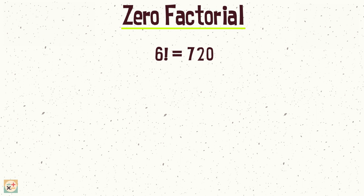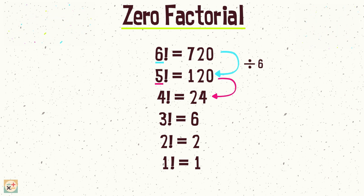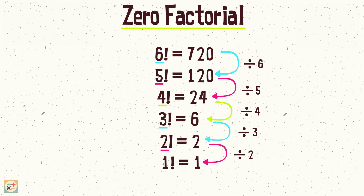Let's have a look at this pattern of factorials. Notice that if we work in descending order, each value can be divided by the value of n. So once we reach 1 factorial, if we are following this rule, then we divide this value by 1. 1 divided by 1 equals 1. Hence, if we are following this convention, then 0 factorial is equal to 1.